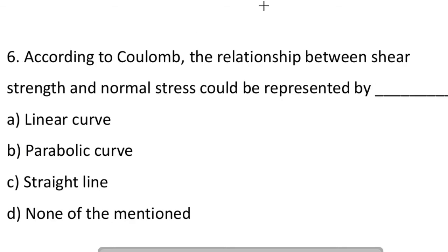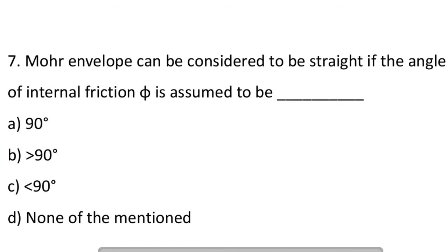Next question: according to the Coulomb theory, the relationship between shear strength and normal stress could be represented by. Option A: linear curve. Option B: parabolic curve. Option C: straight line. Option D: none of the mentioned. So the answer is B, parabolic curve.